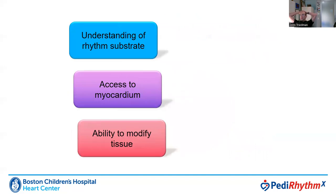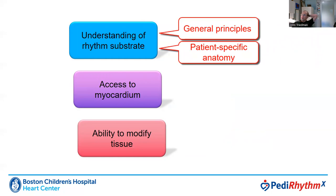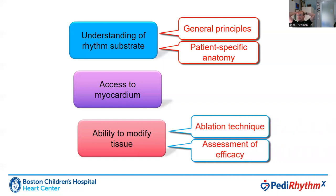In order to successfully approach these interventionally with the goal of reducing their prevalence in patients with complex anatomies, we need to think in terms of basic steps. We need to understand the rhythm substrate, make sure our catheters have access to the myocardium, and ensure we have ability to modify tissue. We need to put together general principles, understand patient-specific anatomy from history and advanced imaging, and recognize that the tissue is thickened and fibrotic — we may need advanced ablation techniques and must assess efficacy after performing interventions.